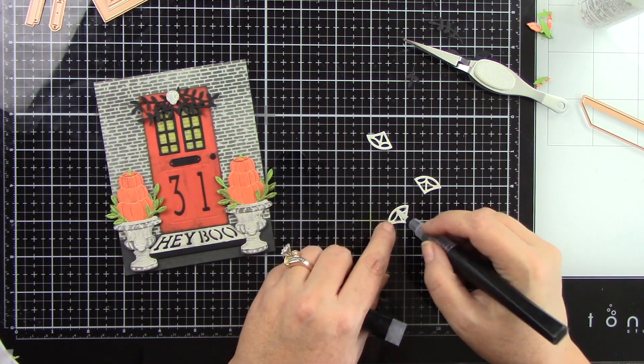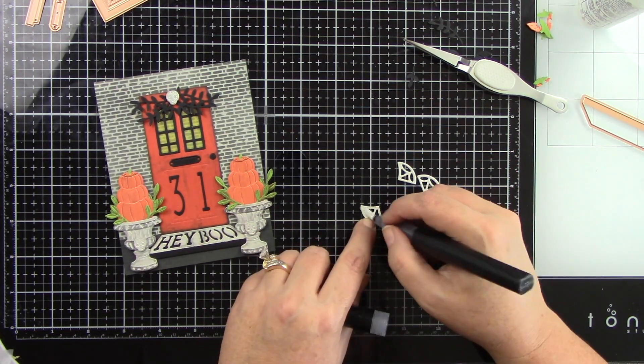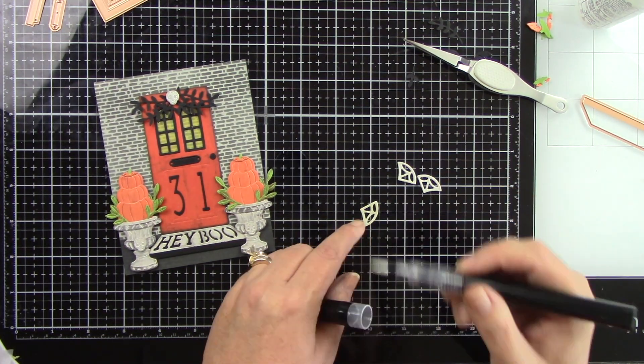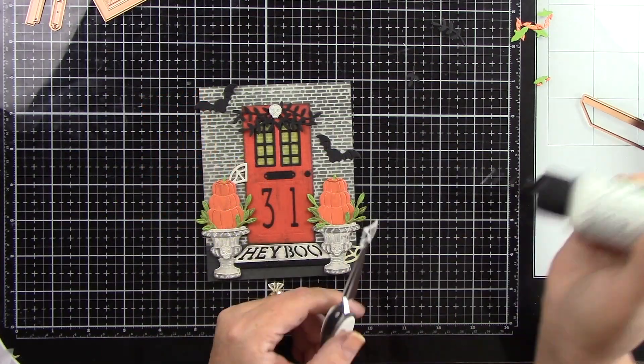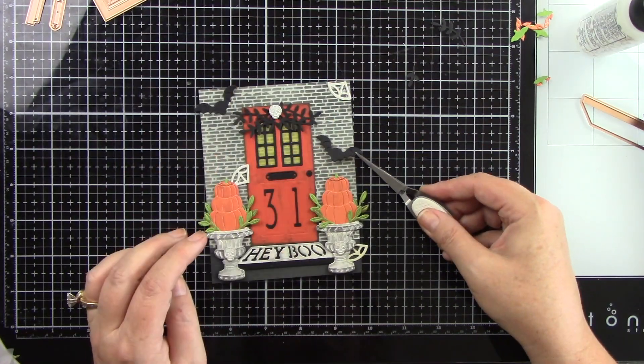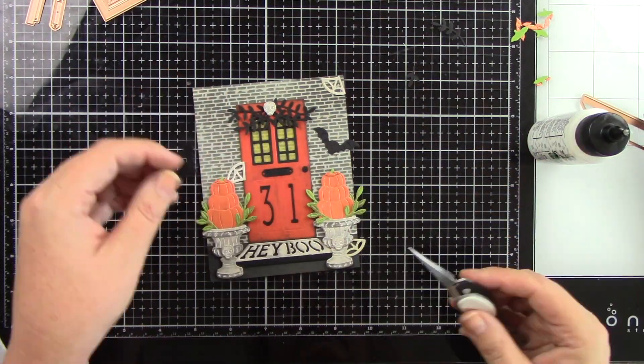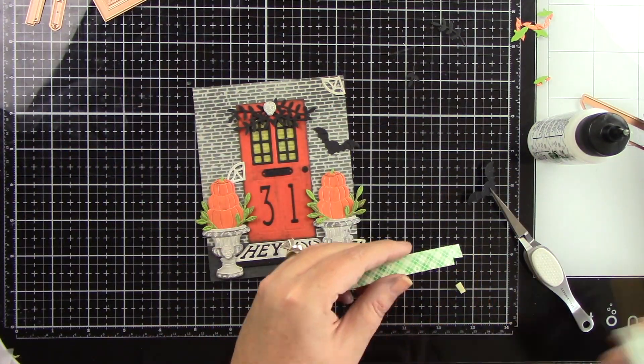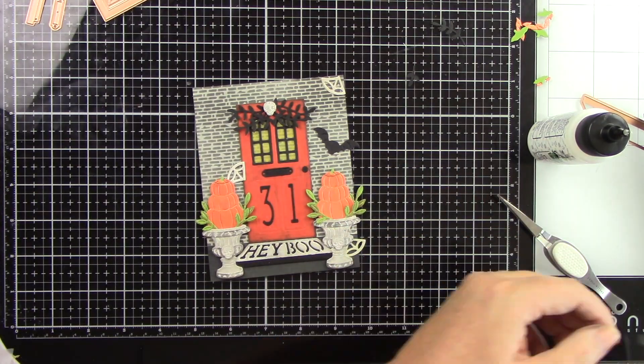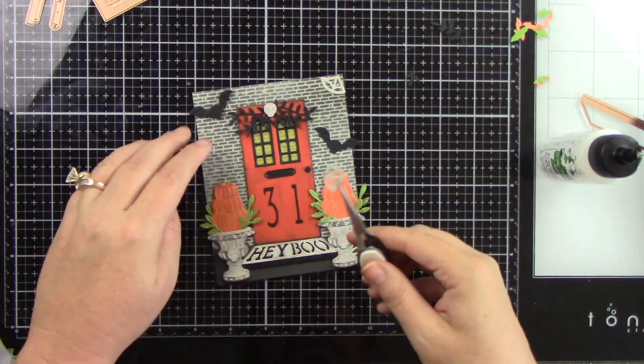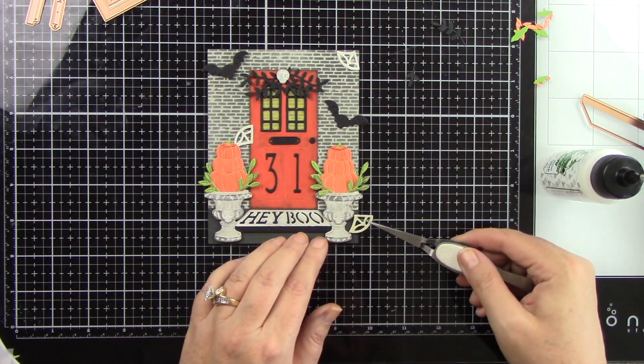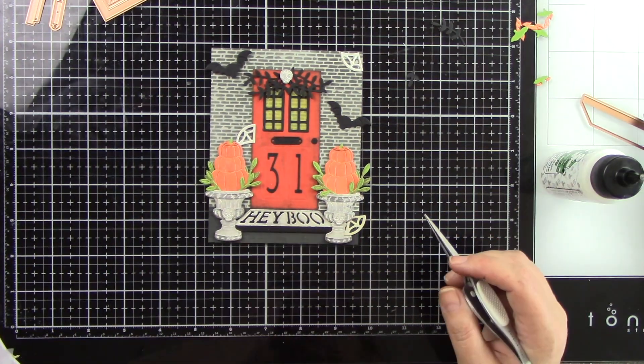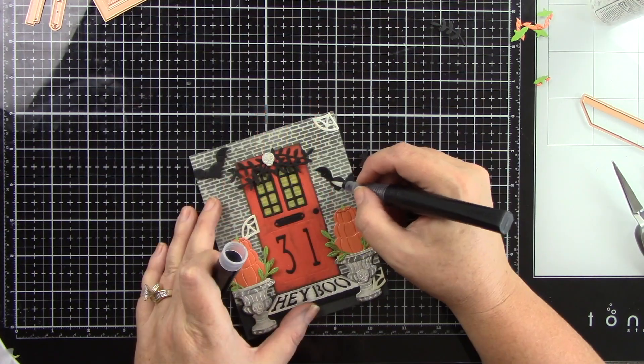Now I have my little spider webs, and I'm adding some Spectrum Noir crystal clear glitter pen to it. I felt like that was a tongue twister. And I'm going to glue those down. I've got three of those. I've got two bats, and I'm just going to glue those all over the front of this house. This little bat will have some foam tape, and that spider web will go from like the house to the pumpkin, and then the other one will kind of be at the bottom there. And I will trim off any excess that's hanging over the side of this card panel.